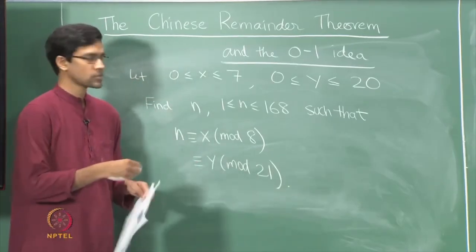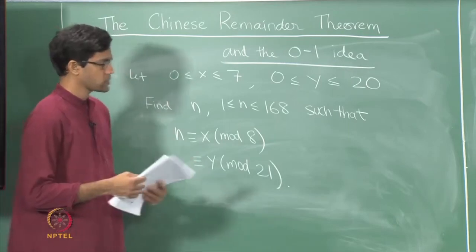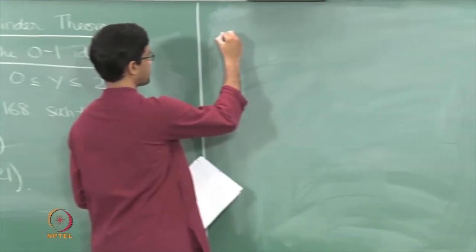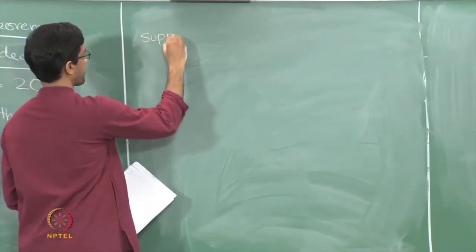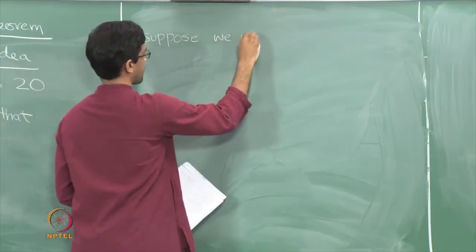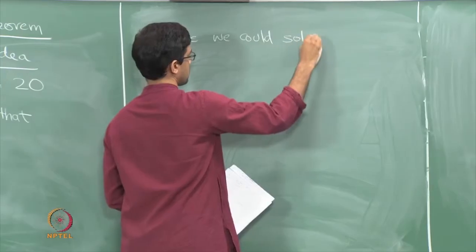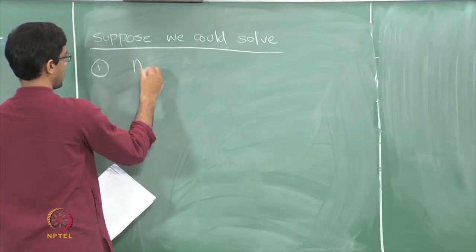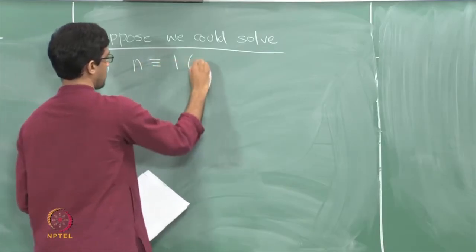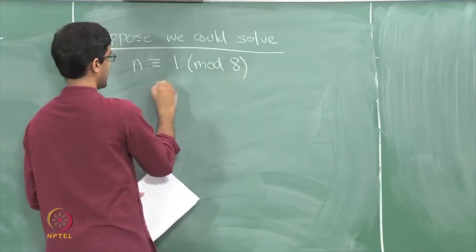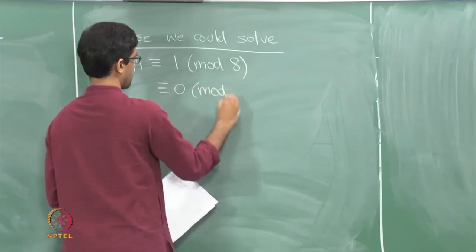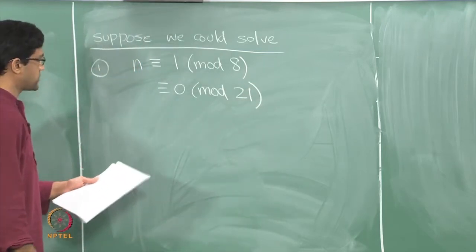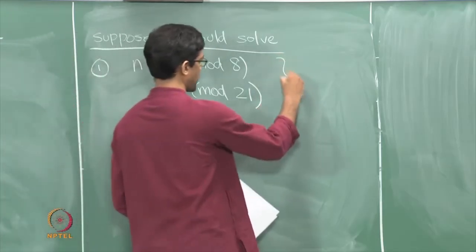Let us bring in our 0-1 idea again. This is the general problem we are trying to solve, but suppose we could instead solve two simpler problems. Problem 1: find n which is congruent to 1 mod 8 and 0 mod 21. Suppose I knew how to solve this — let me call that solution n1.